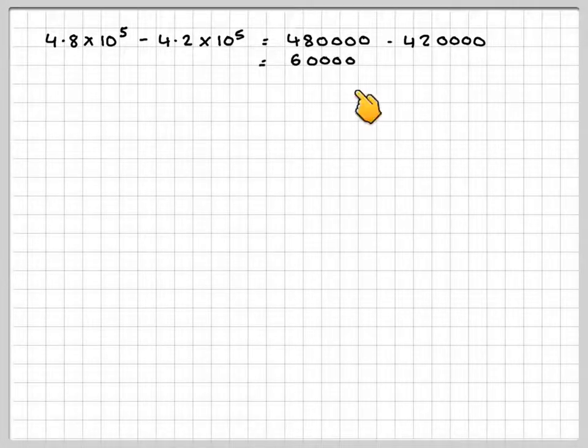That gives 480,000 minus 420,000, which is 60,000, or 6 times 10 to the 4 if you want to put that in standard form.